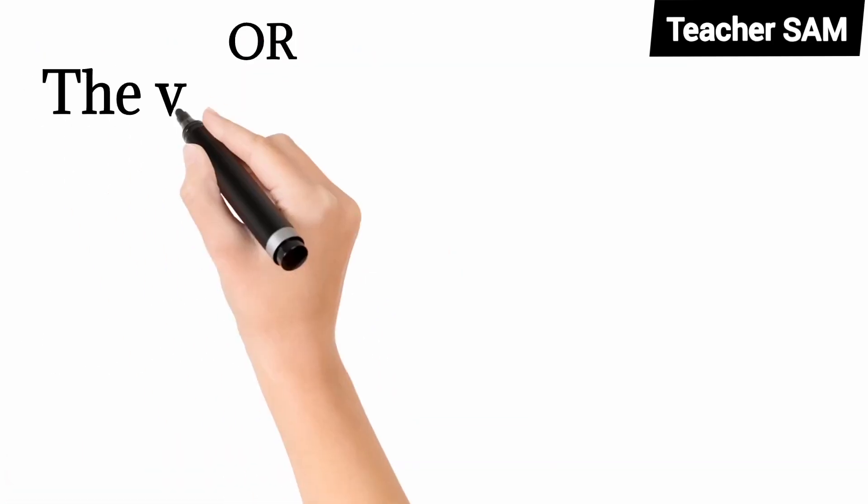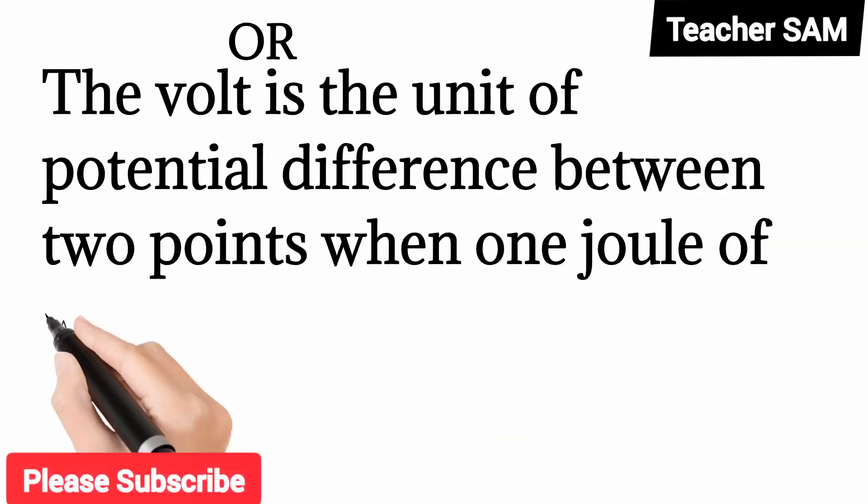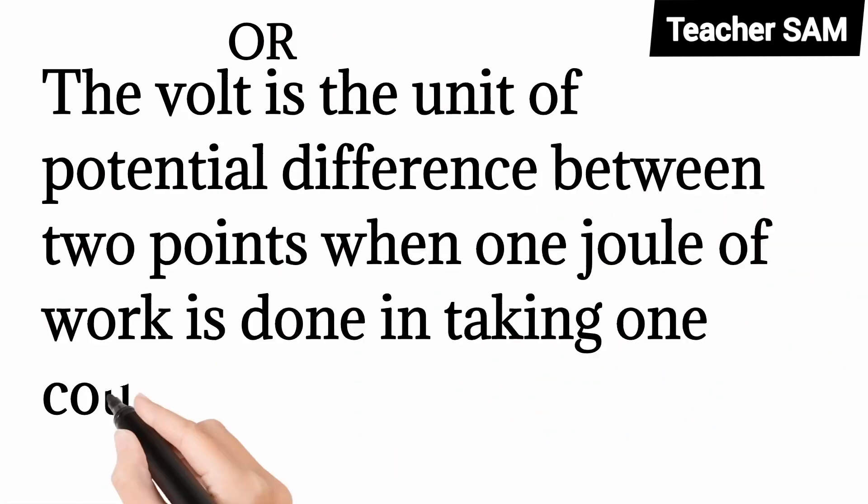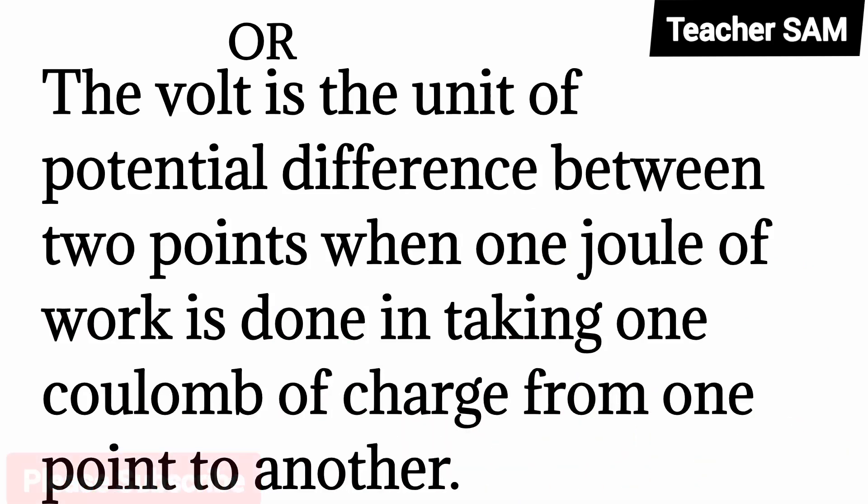The volt is the unit of potential difference between two points when one joule of work is done in taking one coulomb of charge from one point to another.